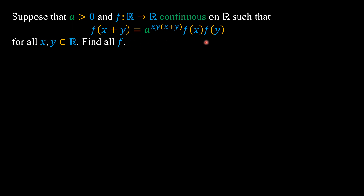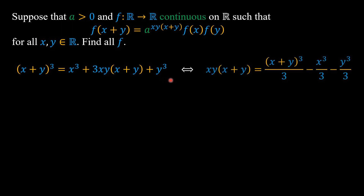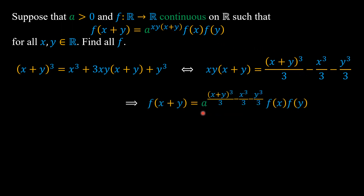To solve this problem, we are going to use simple algebra to convert this functional equation into a Cauchy exponential equation. We can see that (x+y)³ equals x³ plus 3xy times (x+y) plus y³, and of course xy times (x+y) equals this quantity, so we can replace xy times (x+y) with this expression. So we have f(x+y) equals a to the power of this quantity times f(x) times f(y).